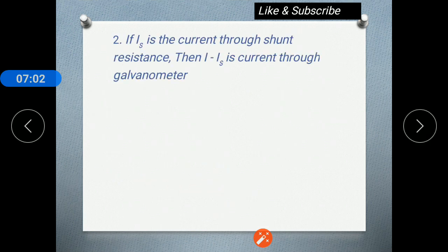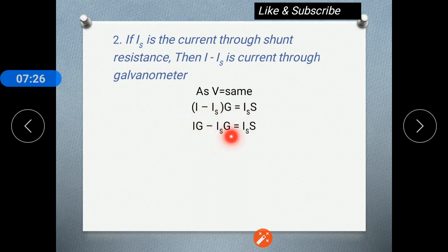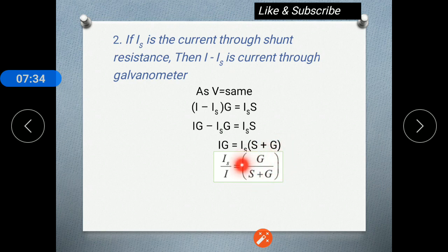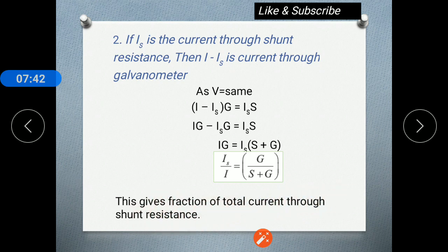In another case, if I_S is the current through the shunt, then the remaining current through the galvanometer is I − I_S. Applying the parallel condition — (I − I_S) × G = I_S × S — and solving, we get I_S / I = G / (S + G). This formula gives the fraction of the total current through the shunt resistance. These are the important formulas used while solving questions on the ammeter. In the next lecture, we will see competitive examples on the ammeter and another part: galvanometer as a voltmeter.